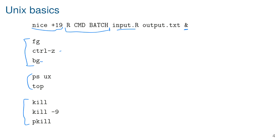You need to give `kill` a process ID that you learn from `ps ux` or `top`. The `-9` flag means you really want to kill the job — if it tends not to want to be killed, `kill -9` is like a super kill. `pkill` lets you kill jobs by pattern rather than a specific process ID, so you can kill all R jobs at once.